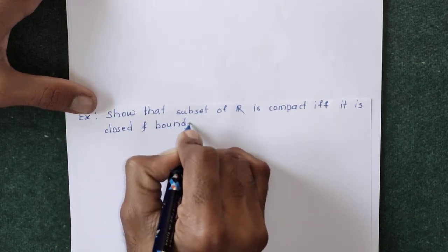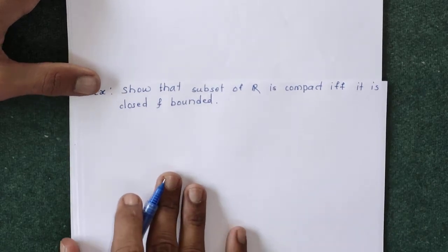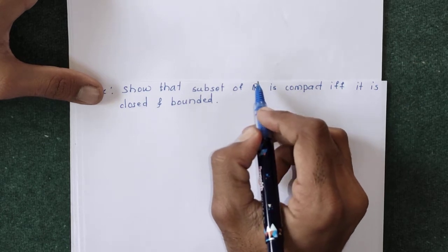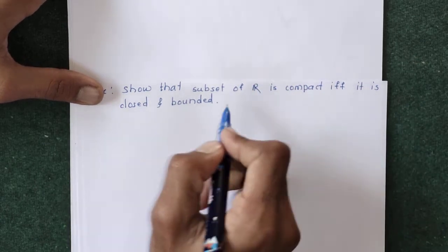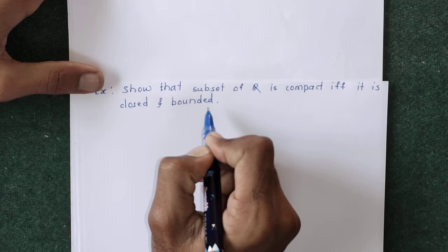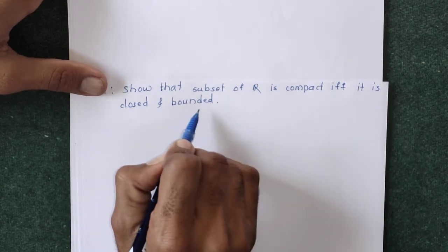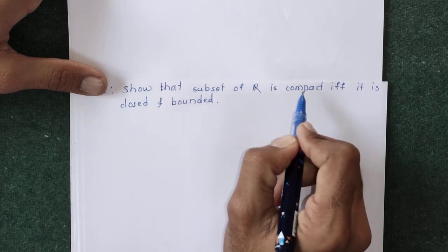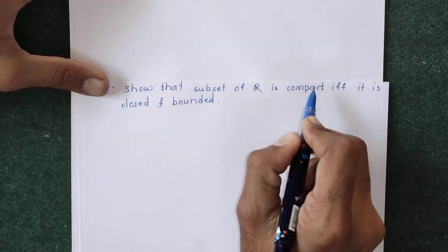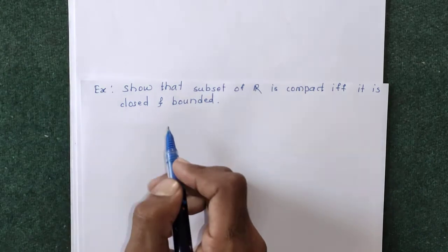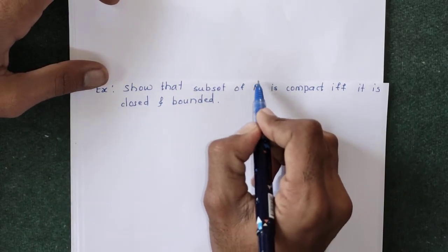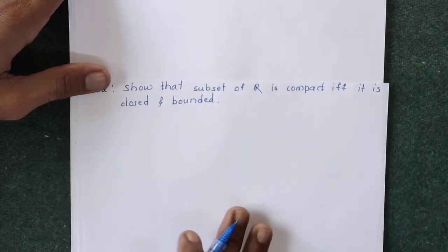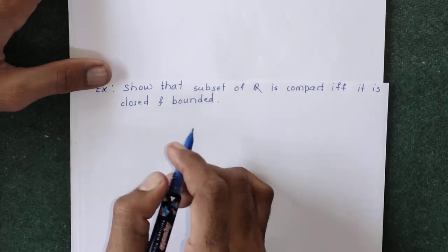In real analysis, a subset of real numbers is said to be compact if and only if it is closed and bounded, but not in metric spaces. If you find a subset which is closed and bounded, then in a metric space that set cannot necessarily be compact, because we have to check every open cover has a finite subcover. But in R, that is in real analysis, you can directly say that a set is compact if and only if it is closed and bounded.